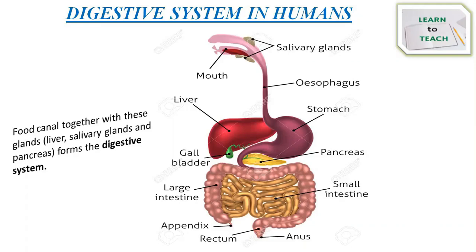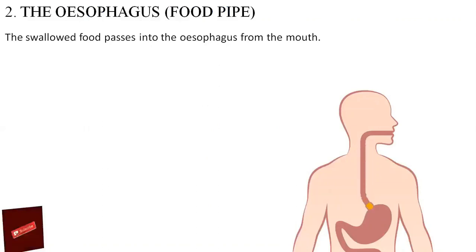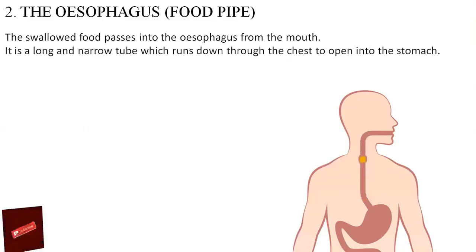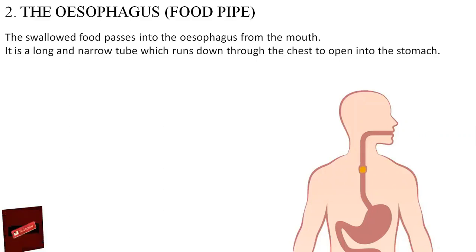The tongue helps in swallowing the food. So where does the swallowed food go from the mouth? The answer is the esophagus, also known as the food pipe. The swallowed food passes into the esophagus from the mouth. The esophagus is a long and narrow tube which runs down through the chest to open into the stomach. Before moving into the food pipe there is a small common passage for both food and air, and that is called the pharynx.